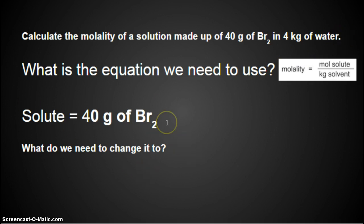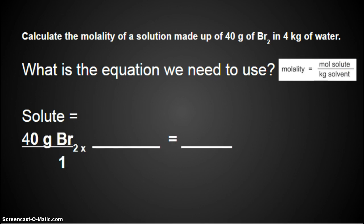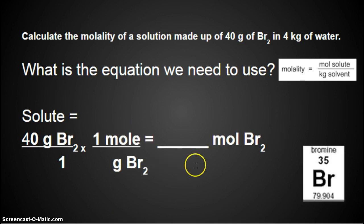What do we need to change it to? So I have 40 grams of Br2, but what do I need it to be? Well, because it's the solute, I need it to be moles. So start with what you know. Put it over 1. What unit goes on the bottom of this fraction? Grams of Br2, because I want them to cancel. And what's the unit of my final answer? Moles, Br2. So what do I have to put up here? I have to put up 1 mole.